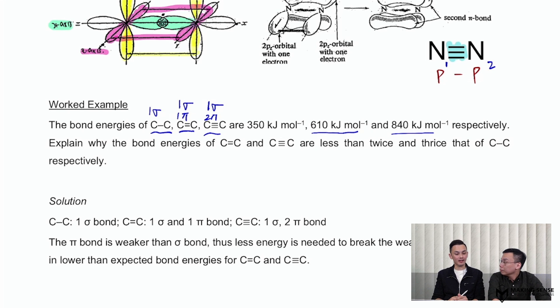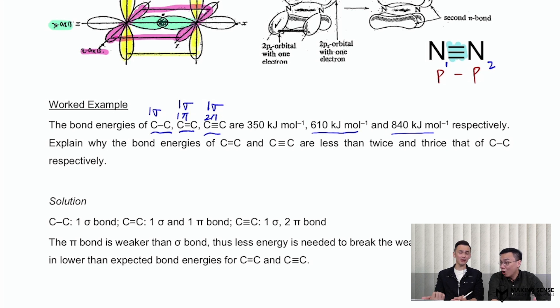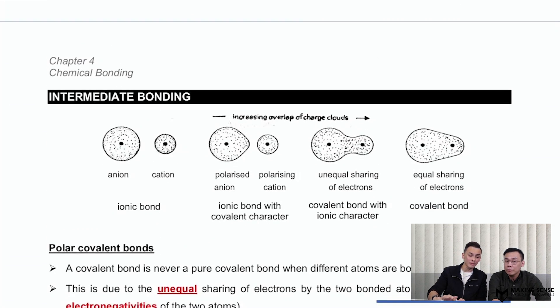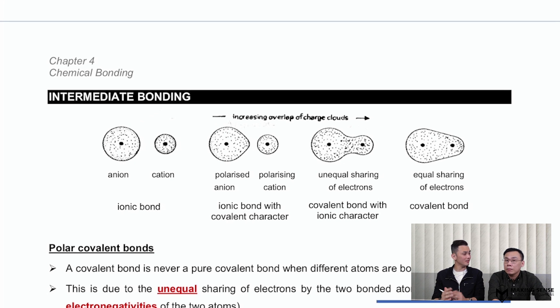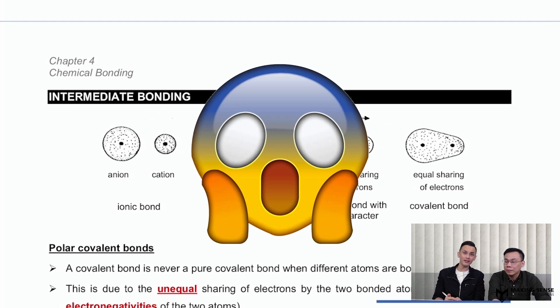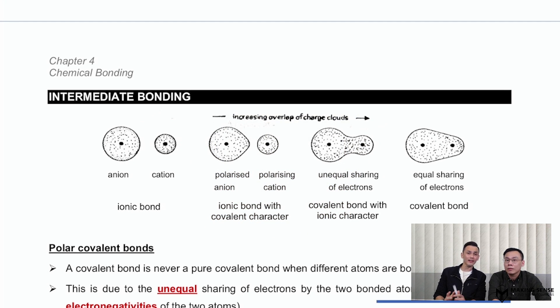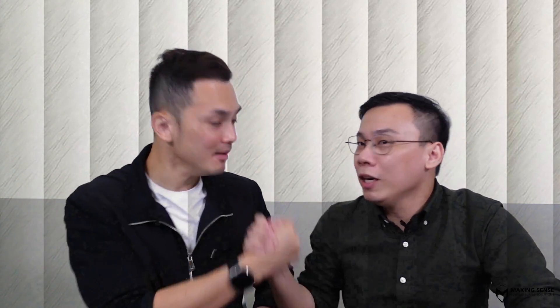Before we end, we have to let students know that not every covalent bond is the same — some are pure and some are impure. This brings us to the next portion of the notes: a term called intermediate bonding, which sounds very complex, but our friendly tutors in class will explain this to you. So do revise the material, go through your homework questions, and we look forward to seeing you in class. We are the Chemical Bonding Brothers.